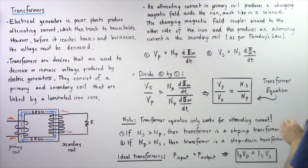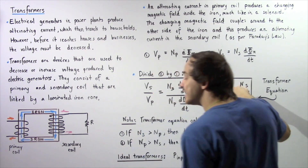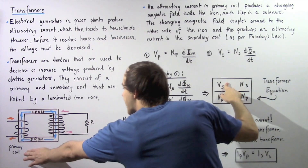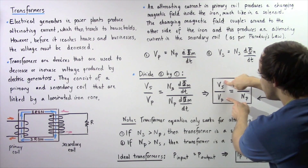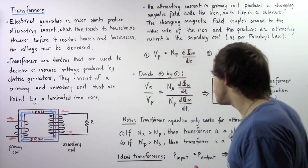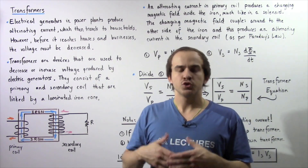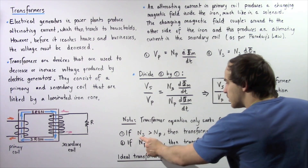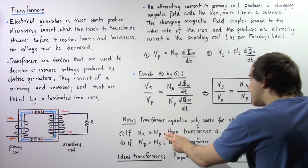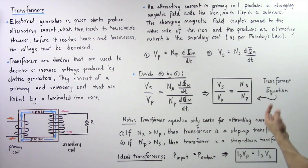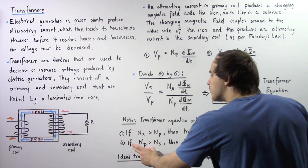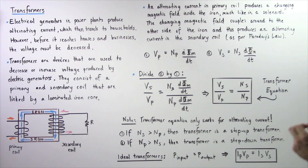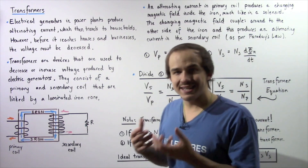If the voltage on the secondary is higher than the voltage on the primary, that means we have a greater number of coils on the secondary than on the primary. These voltages can be either RMS voltages or peak voltages. If the number of loops on the secondary coil is greater than on the primary coil, the transformer is a step-up transformer and the voltage is increased. On the other hand, if the number of loops on the primary is higher than on the secondary, the transformer is a step-down transformer and the voltage decreases.